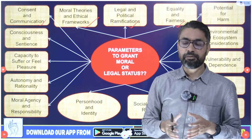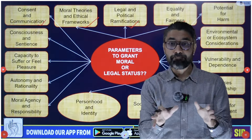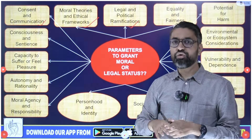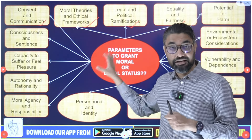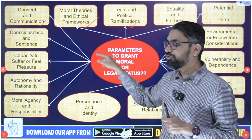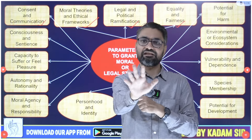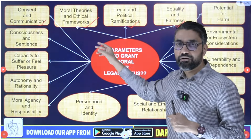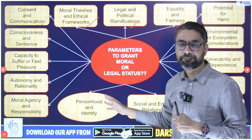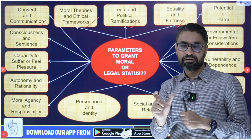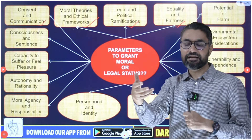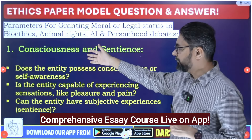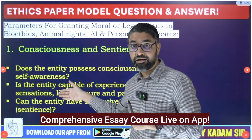These are the 15 parameters to apply when deciding the moral and legal status of different entities. After your introduction, make a chart of these parameters. For every entity mentioned, you should be able to cover at least seven or eight parameters in your answer, and under every parameter, ask two or three critical questions. By finding answers to those questions, we can fix the moral and legal status of that entity.